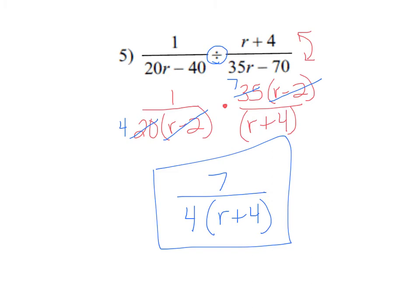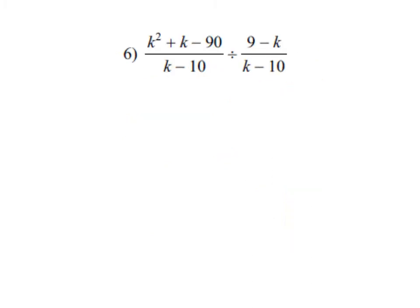Let's have you try one. It's another division problem, so what I want you to do is factor anything that can factor, and then change this division to multiplying by the reciprocal. The one hint I'm going to have for you is this 9 minus k is kind of weird. We normally have the k first.